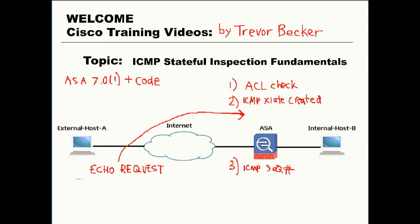Here's an example of an ICMP stateful inspection in progress. As an inbound ICMP echo request comes into the firewall, if the access list allows the traffic, the firewall is going to create a temporary ICMP xlate. Next, the ICMP inspection engine will document the echo request's ICMP sequence number, and the ICMP inspection engine will open up a temporary ICMP one-response connection.